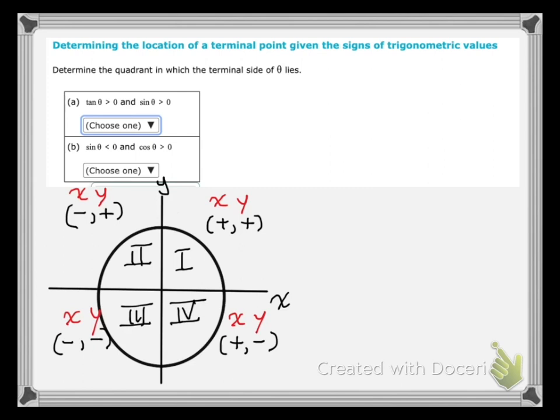We are being given some theta value that we don't know anything about initially. There's some angle theta, and we're being asked about what quadrant it's in. Determine the quadrant. And here's the information that we have about it.